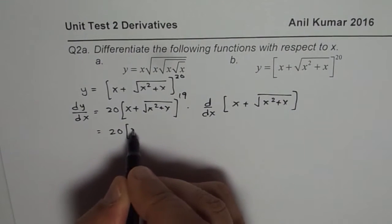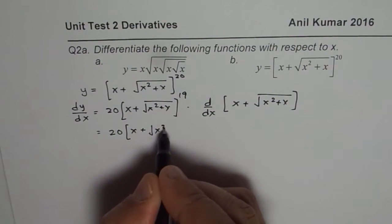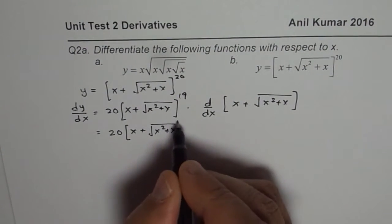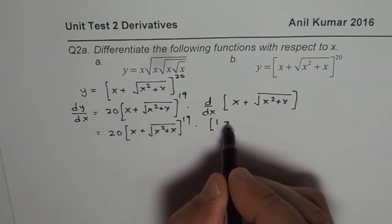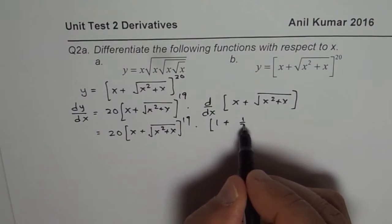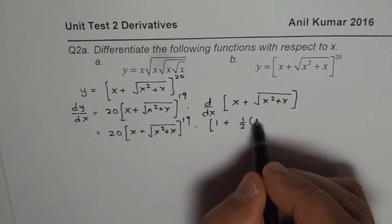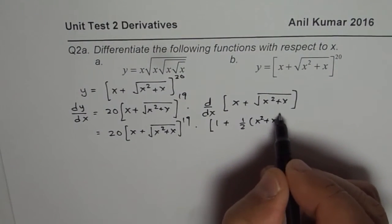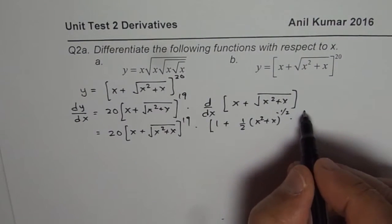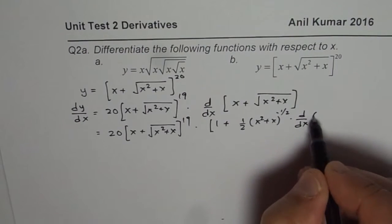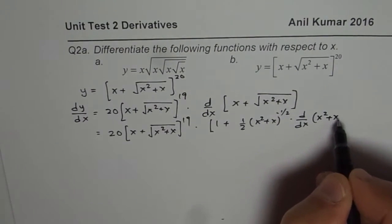We get x plus square root of x squared plus x to the power of 19 times the derivative of this function is 1 plus, and derivative of this is half of x squared plus x to the power of minus half times derivative of inside function. So we write d/dx of x squared plus x.